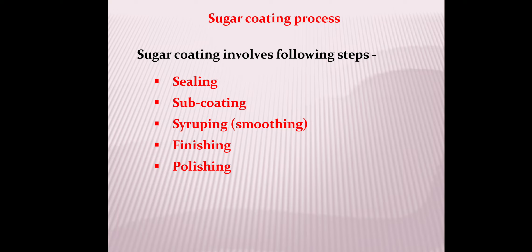The sugar coating process consists of the following steps: first is sealing, then sub coating, then syruping, then finishing, and finally polishing. We will discuss each one in the following sections.